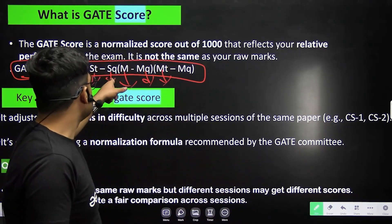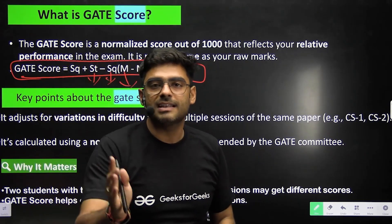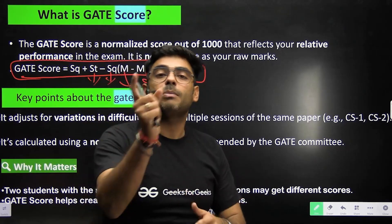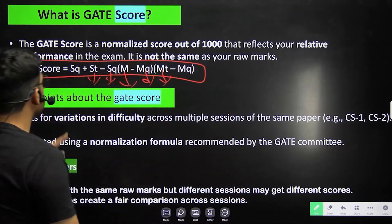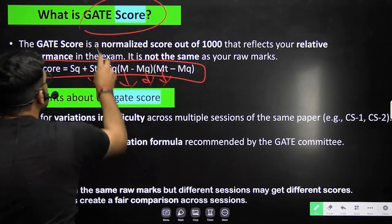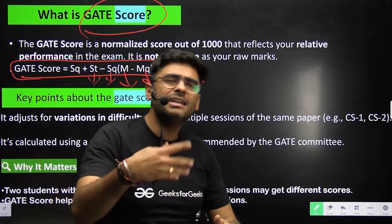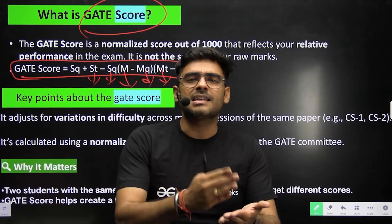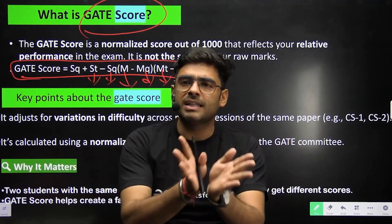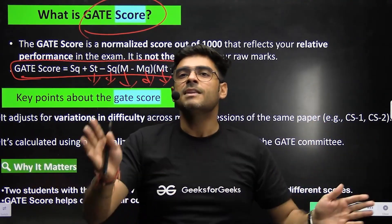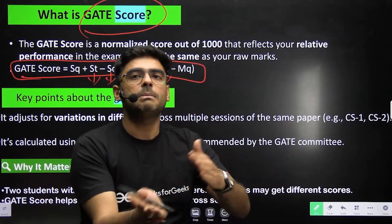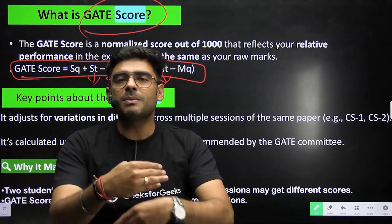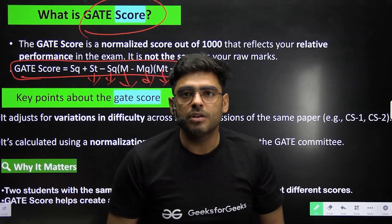So SQ is just the qualifying score given by GATE, and ST is the score given to the top ranker. Now, why is the GATE score calculated at all when we have raw marks? GATE examinations are conducted in a number of shifts — for CS, IIT, Mechanical, and every branch. For a particular session the paper may be tough, and for another session the paper may be easy, so we need some criteria for fair evaluation among students.